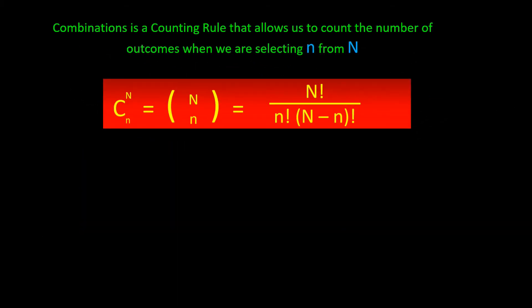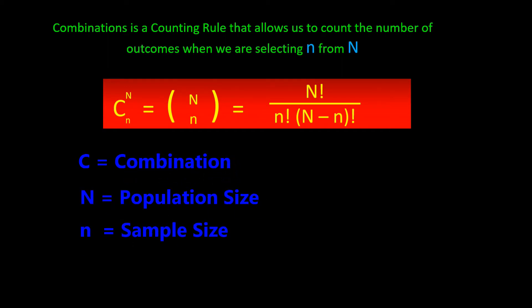The formula to calculate this by hand is shown here. You have a C, which means combination, and then you have big N and little n. Big N refers to the population size, little n refers to the sample size.